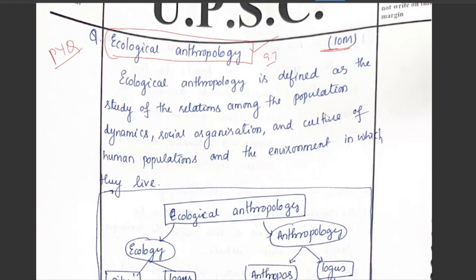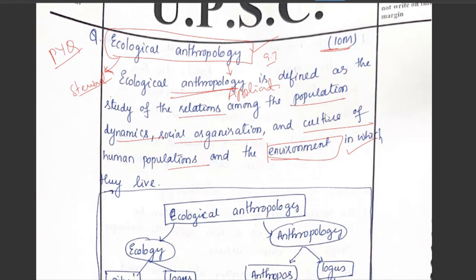Ecological anthropology comes under new evolution, associated with the contributions of Julian Steward. It can also be seen across different branches and applications of anthropology. Ecological anthropology is defined as the study of relations among population dynamics, social organizations, and cultures of human populations with the environment in which they are living.